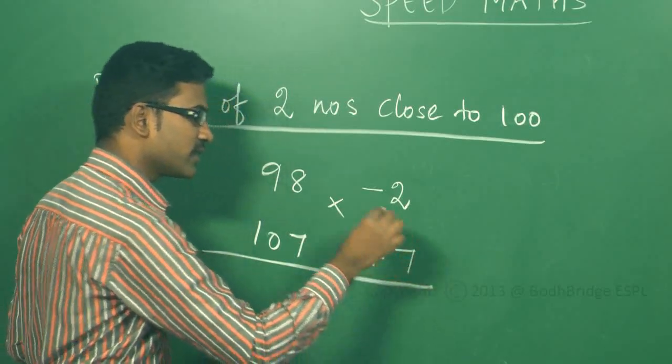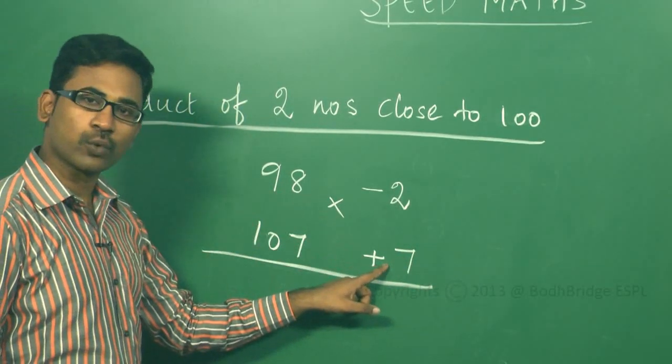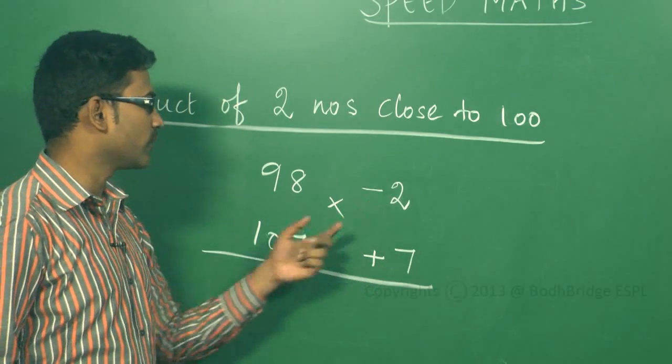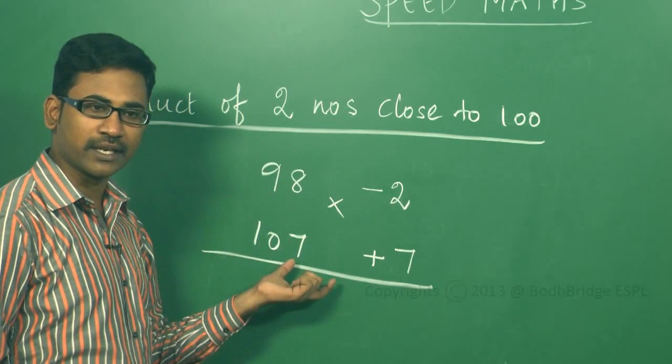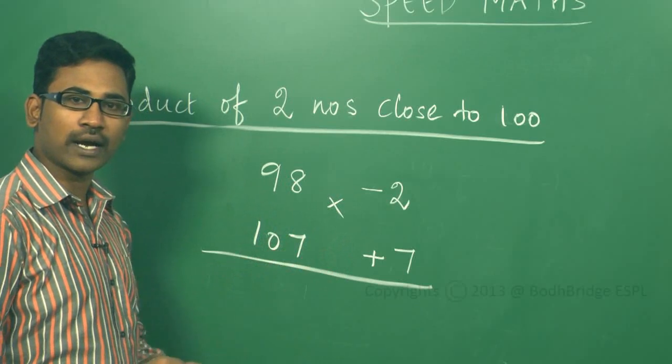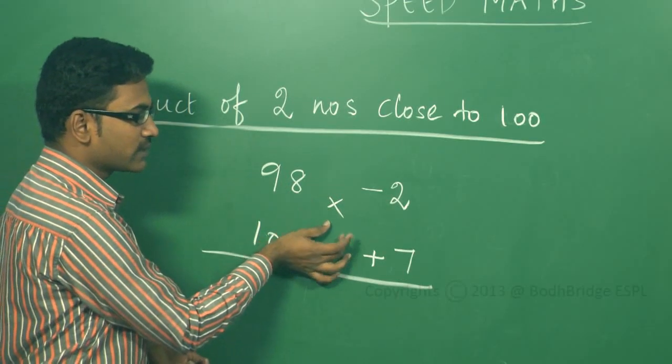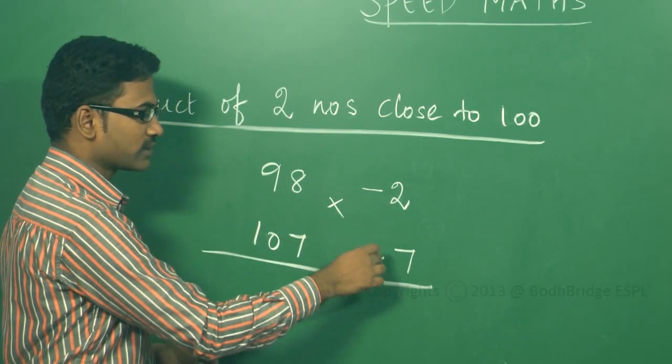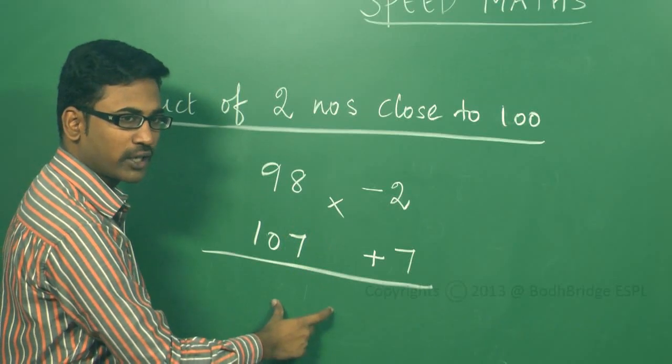The very interesting feature in this one is 98 plus 7 will give 105 and 107 minus 2 will give 105. Whatever may be the number in this kind of close to 100 numbers, if you're adding these two and adding in cross, you will get the same number that you have to put it here.